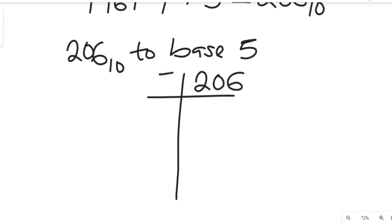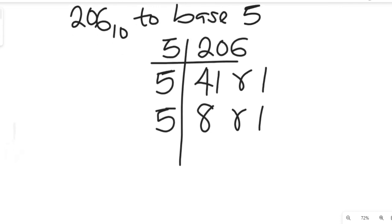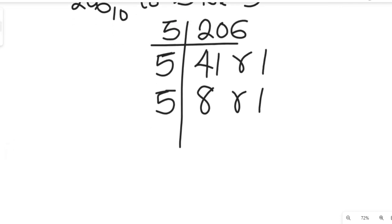206 divided by 5 gives us 41, remainder 1 — because 41 times 5 is 205. Then 41 divided by 5 gives us 8, remainder 1 — because 8 times 5 is 40. Then 8 divided by 5 gives us 1, remainder 3 — because 5 times 1 is 5, and 5 plus 3 is 8.